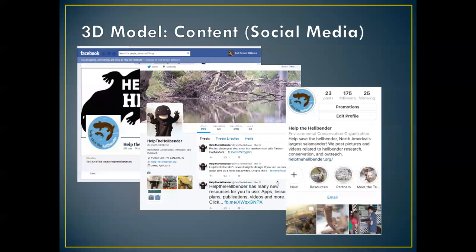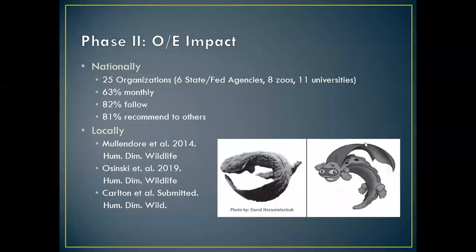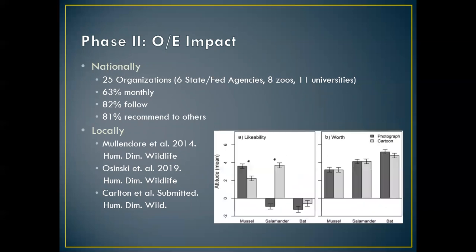We also have Twitter and Instagram — if you follow those platforms, join Help the Hellbender and follow what's going on with Hellbender conservation, not just at Purdue but across the country. We wanted to see how all this outreach and education material was being used — Purdue is the largest generator of outreach and education materials. We found that 25 organizations, 6 states and federal agencies, 8 zoos, and 11 universities are using our curriculum. About 63% are using it monthly, 82% follow us on social media, and 81% are referring other people to our social media.